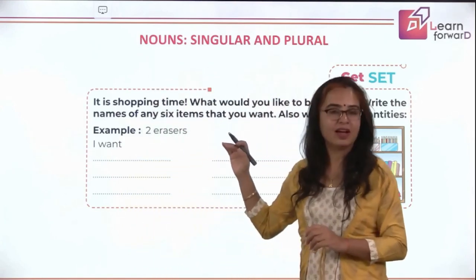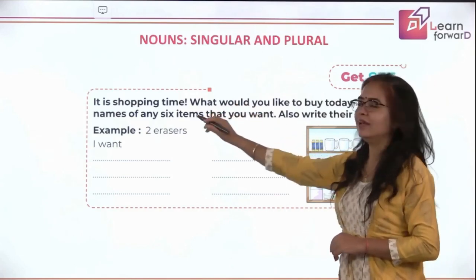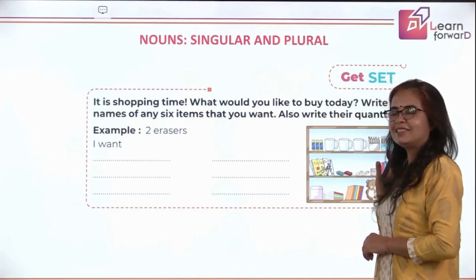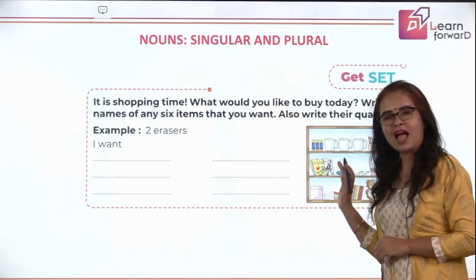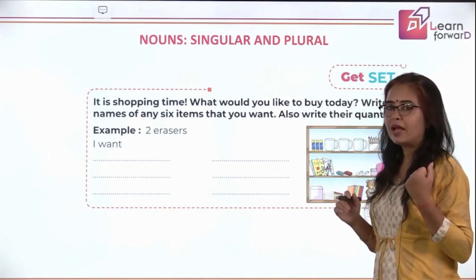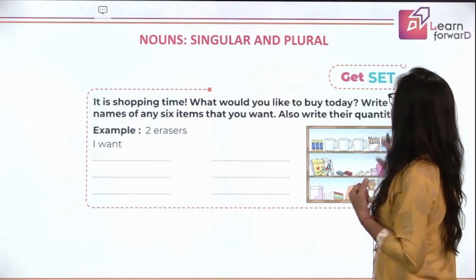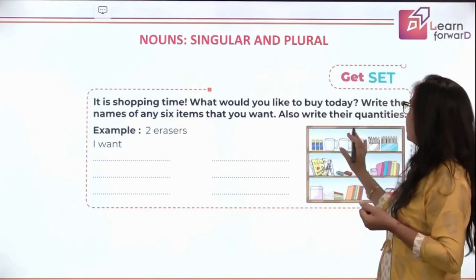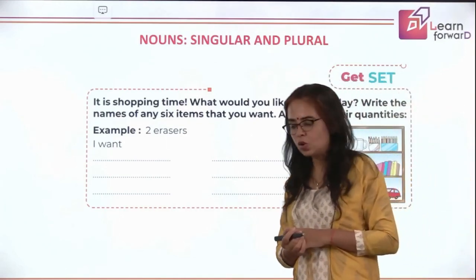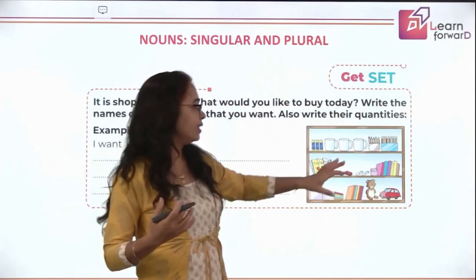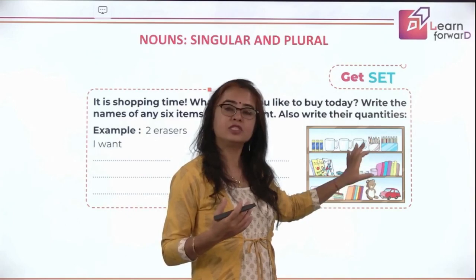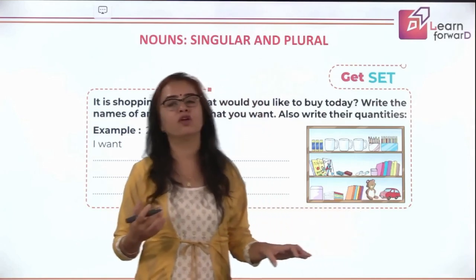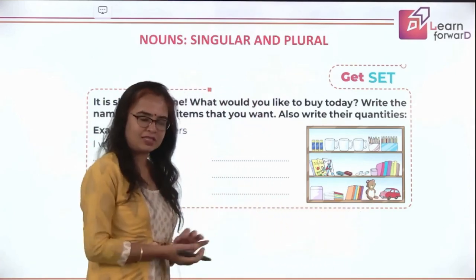Let's have a recap exercise. It's shopping time again — what would you like to buy today? These are the things displayed at your shop. Write the names of any six items that you want and also write the quantity — how many do you want? Let's prepare your shopping list.